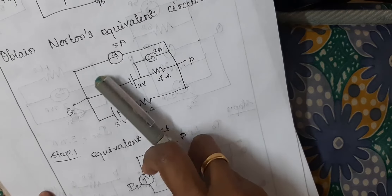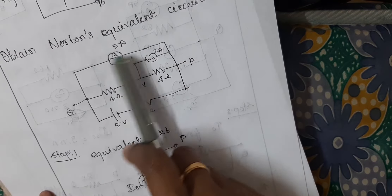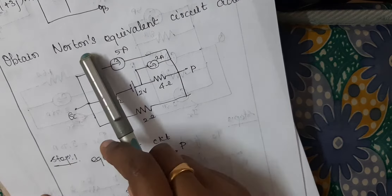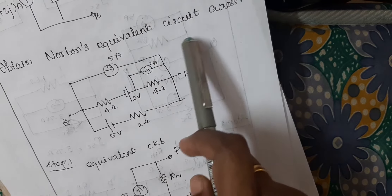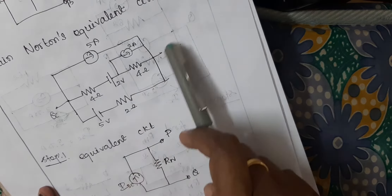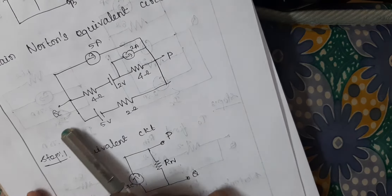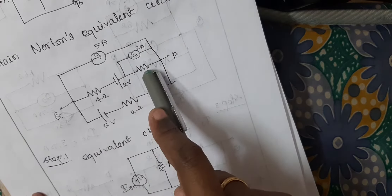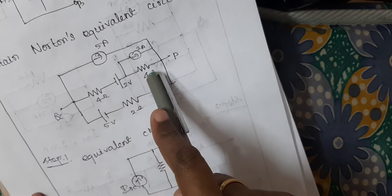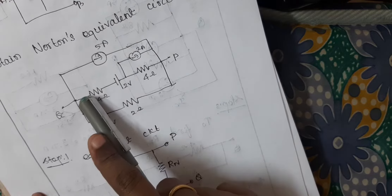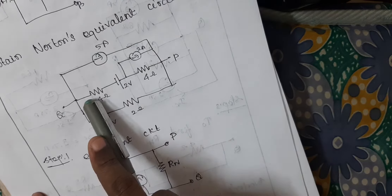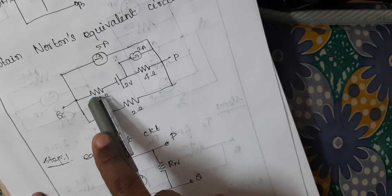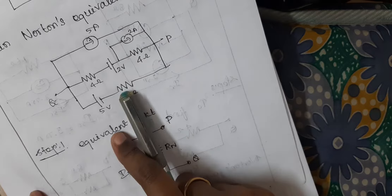The next problem in Norton's theorem: obtain Norton's equivalent circuit across PQ. So it is the circuit — here there is a current source parallel with the resistor, and the voltage source is series with the resistor. Here also a voltage source series with the resistor.